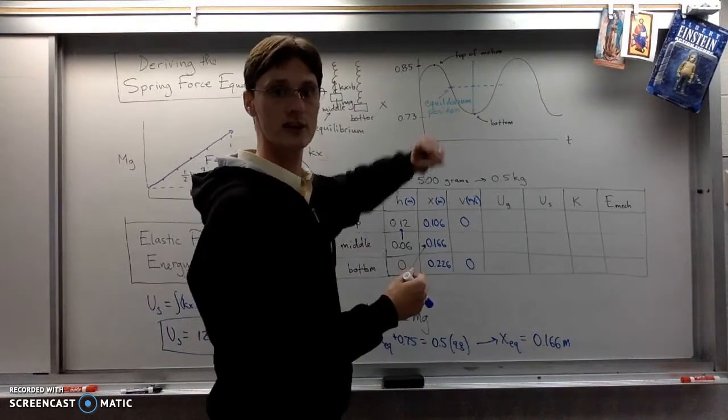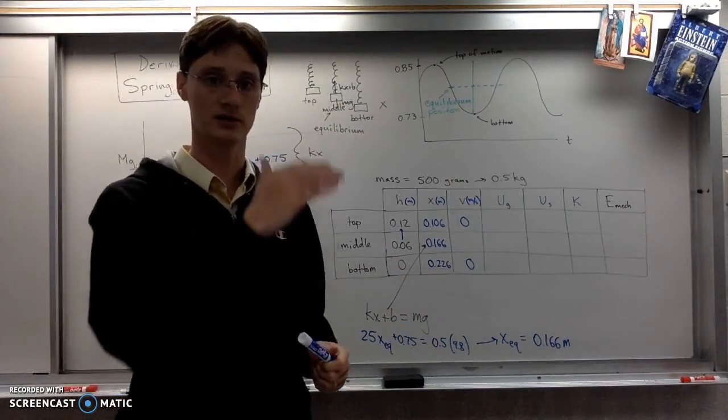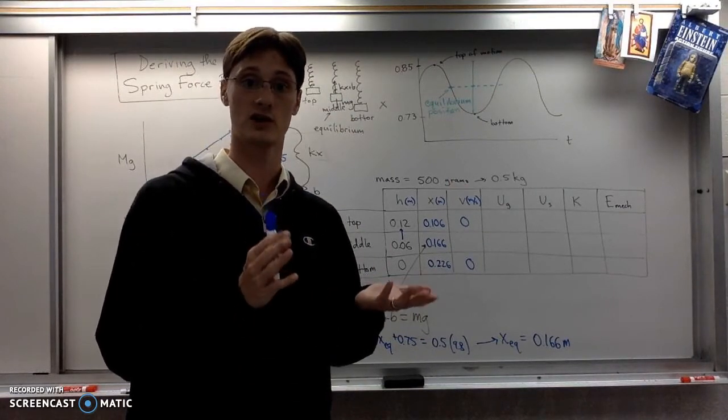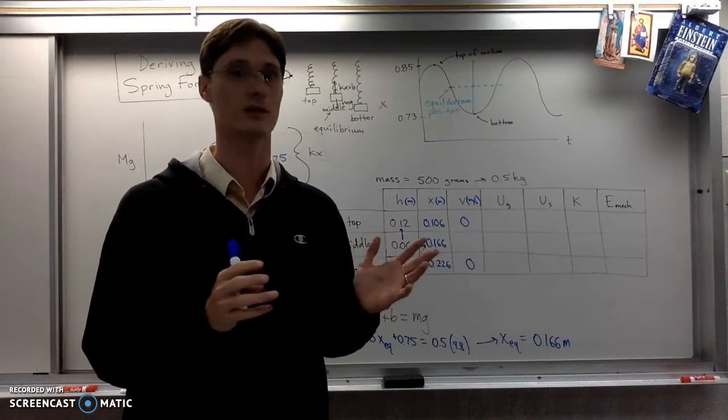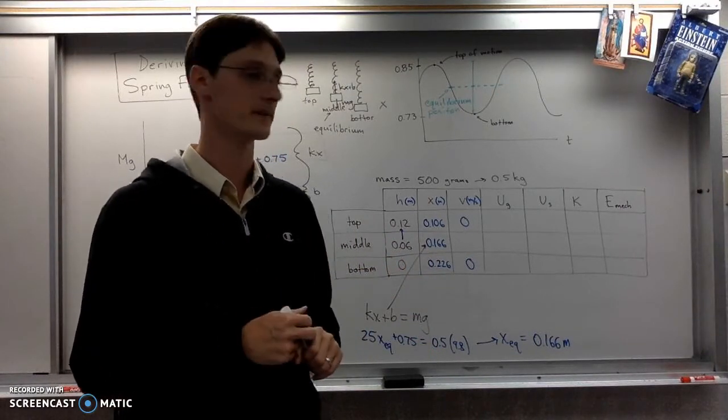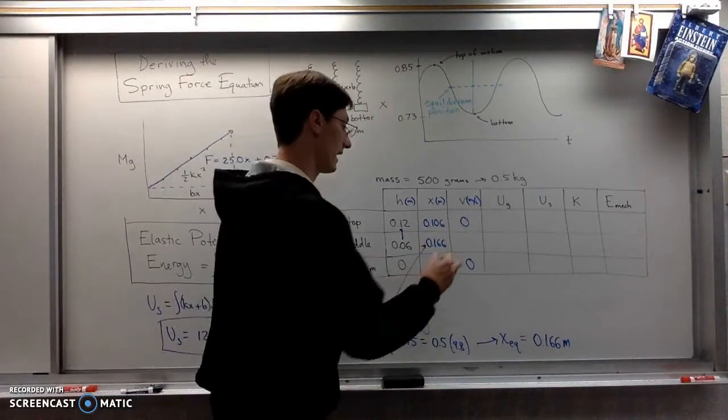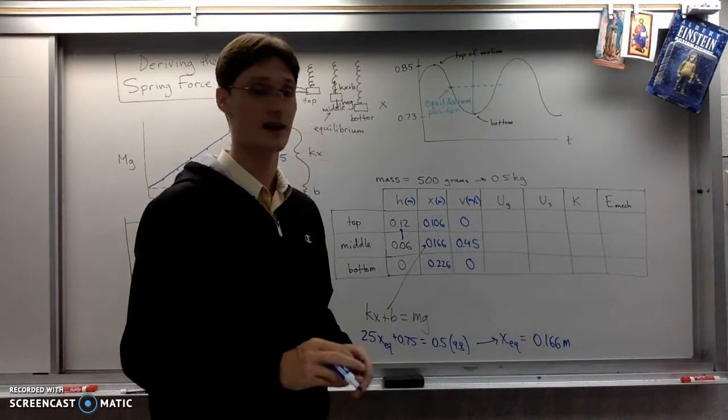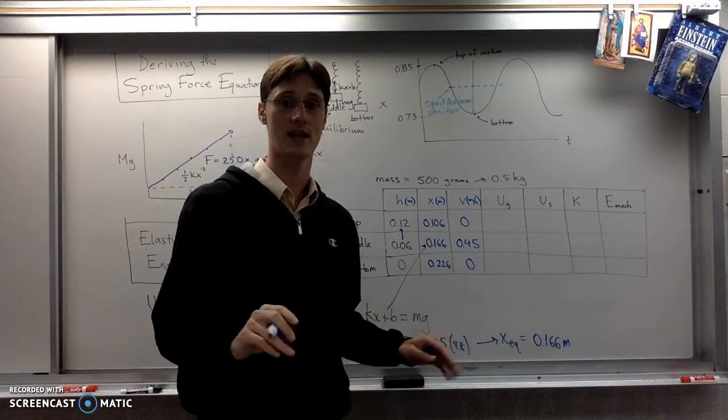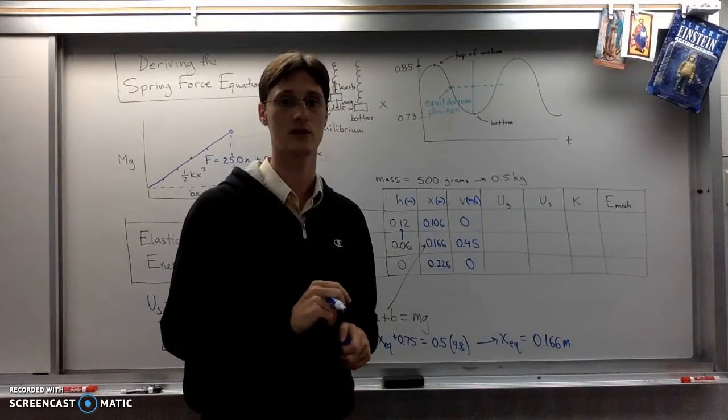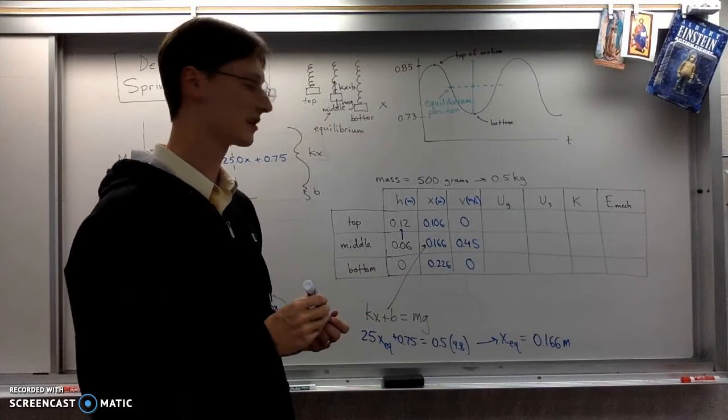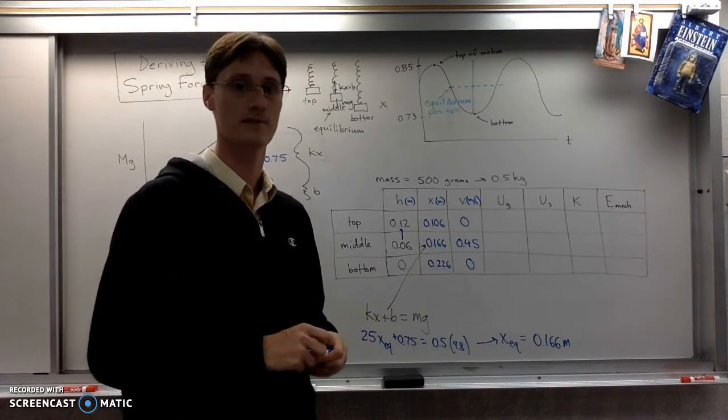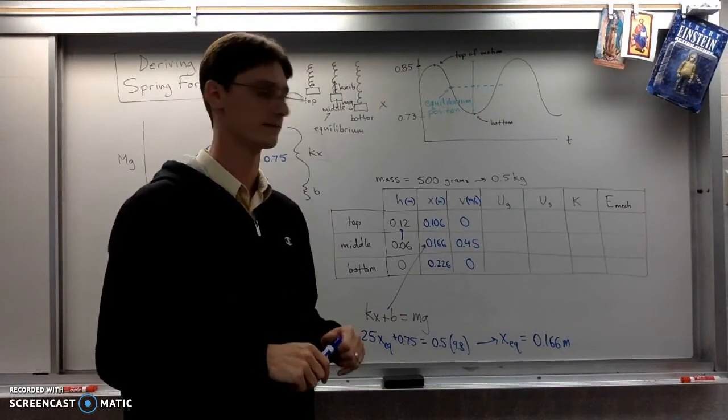So you should be able to, as long as your data doesn't have any like funky peaks or something like that, you should be able to just look through your data table and find something that seems like that's the largest speed and it's some reasonable non-outlier sort of a value. So I'm gonna take a random guess here and say my max speed was 0.45. I have no basis for that number. I just made that up, but you are gonna base it on your data table. So find something that looks like the maximum speed and that should be the speed at equilibrium position, as long as it doesn't seem like an outrageous number.